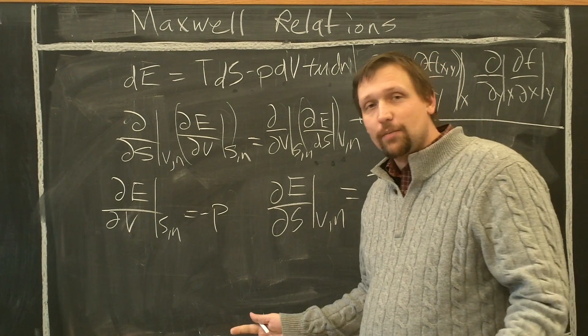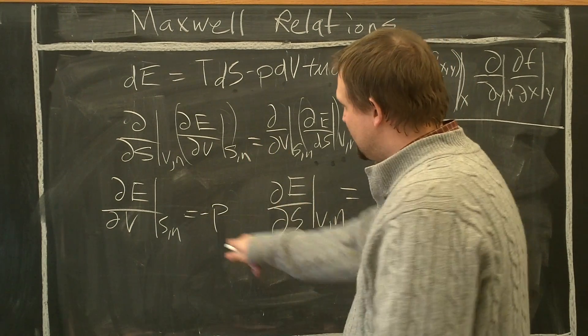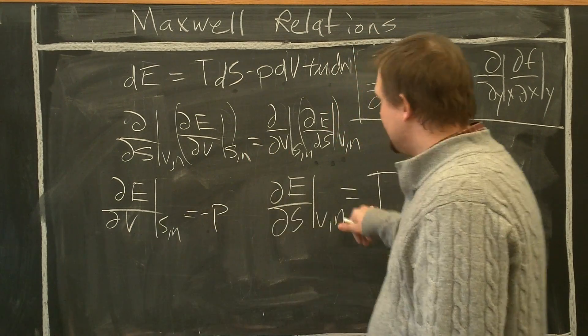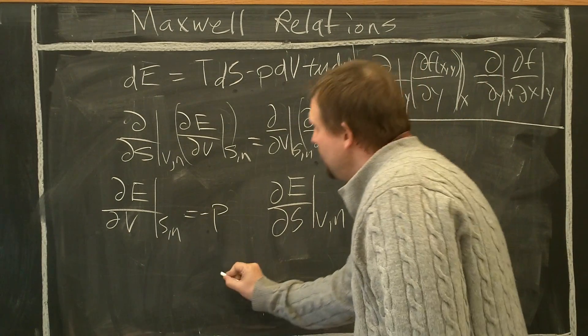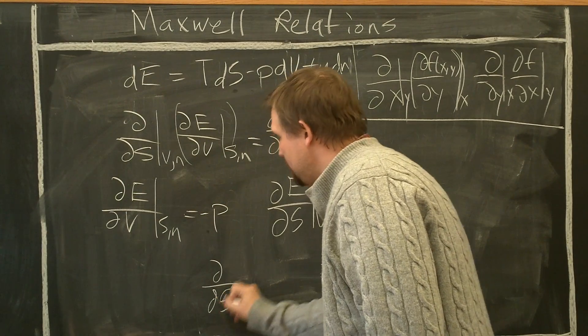To finish the Maxwell relationship from this differential form of state function for energy, we substitute in minus P here and T here, and finally, you arrive at the relationship.